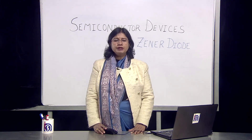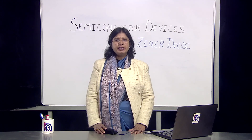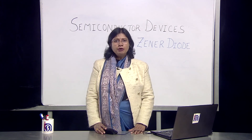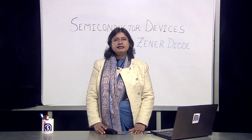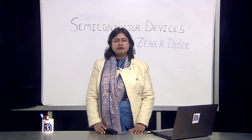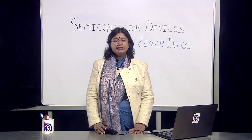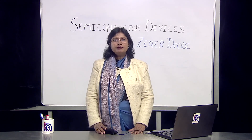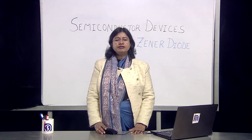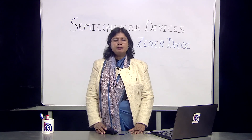If we do not supply voltage beyond Vz or do not connect the Zener diode in reverse bias, it will not function as a regulated power supply or stabilizer. When connected in forward bias, the Zener diode behaves like a simple diode with the same characteristic curve as ordinary diodes. What is particular about the Zener diode is its very high degree of doping, which allows a higher Vz value, enabling it to act as a regulated power supply when in reverse bias beyond Vz.